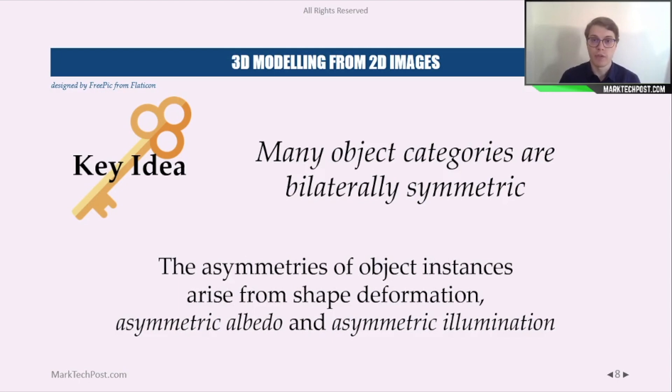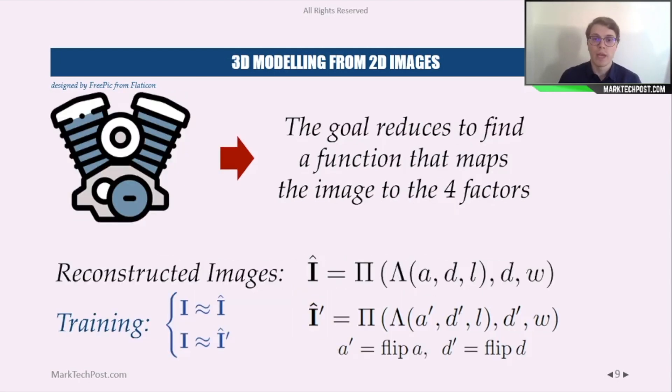Thanks to this observation, we are able to introduce a new reconstructed image, computed as before, but with the albedo and the depth flipped through a horizontal axis or a vertical axis. The model is then optimized to reconstruct both images closer to the real one.